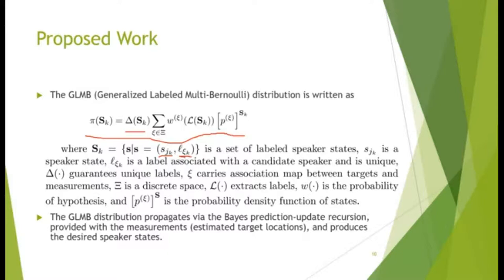XI carries association map between targets and measurements, and XI is a discrete space. L is checked labels and omega is a probability of hypothesis. PXI is a probability density function of states. The GLMB distribution propagates via the Bayes prediction-update recursion, provided with the measurements which are the estimated target locations, and produces the desired speaker states.